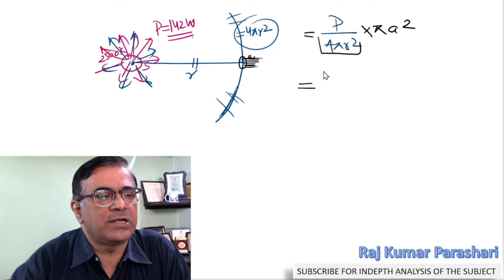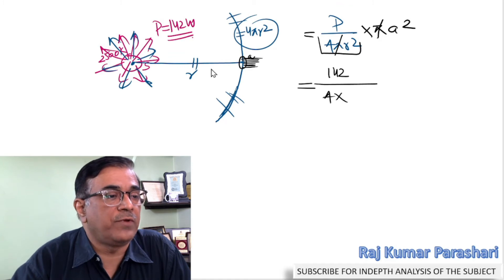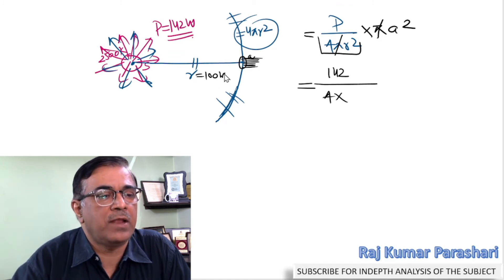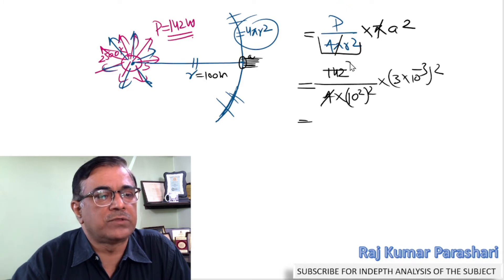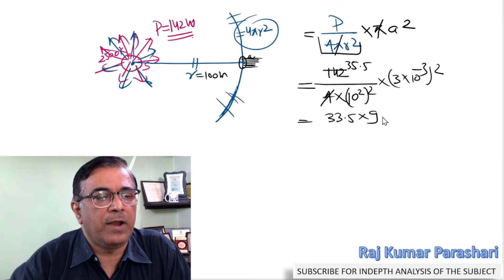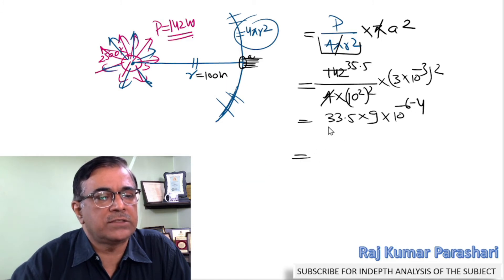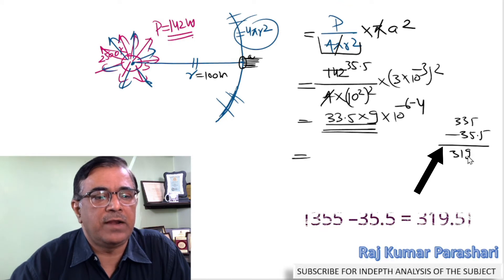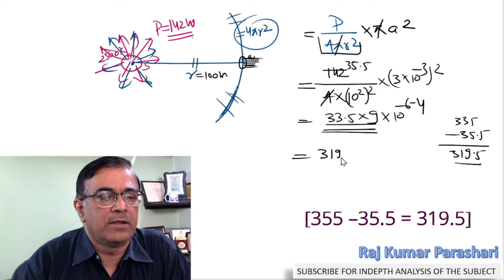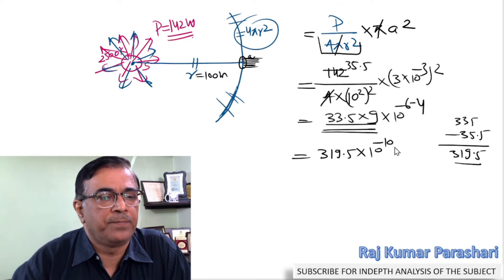The amount of energy entering the eye per second is obtained by multiplying P/(4π r²) by π a². The π cancels, giving P·a²/(4r²). The value of P is 142 watts, and the observer is 100 meters away from the filament, so r = 10² meters. With eye radius a = 3 × 10⁻³ m, the result is approximately 35.5 × 10⁻⁹ × 10⁻⁴, giving 319.5 × 10⁻¹⁰ joules per second.